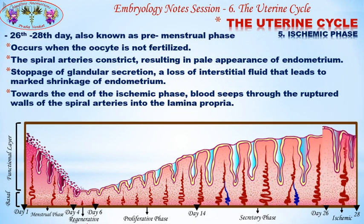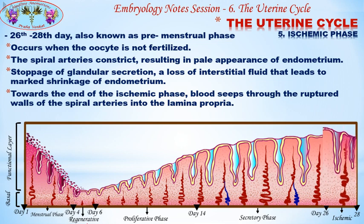The last is the ischemic phase, occurring on the 26th to 28th days, also known as the premenstrual phase. This occurs when the oocyte is not fertilized. The spiral arteries constrict, resulting in a pale appearance of the endometrium, stoppage of glandular secretion, and loss of interstitial fluid, leading to marked shrinkage of the endometrium. Towards the end of the ischemic phase, blood seeps through the ruptured walls of the spiral arteries into the lamina propria.